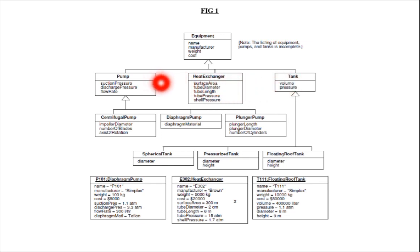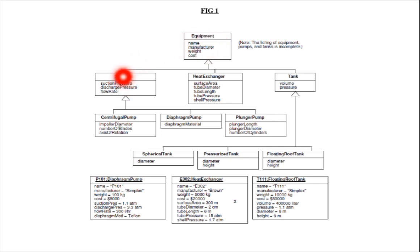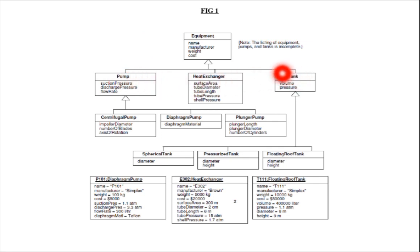You can ask what common features pump can inherit. Pump is also equipment, heat exchanger is also equipment, tank is also equipment. Every equipment will have a name — so the name attribute from the equipment can be inherited by pump, heat exchanger, and tank. Every subclass has inherited the name attribute.